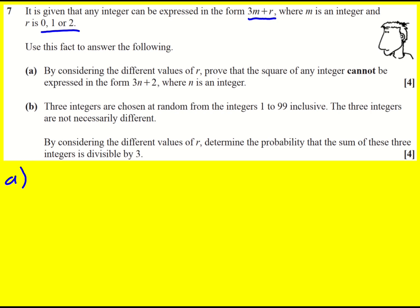So using that idea, we're going to consider these different values of r and show that the square of any integer cannot be expressed as 3n+2, where n is an integer. So I'm going to look at three cases. Case 1, r is equal to 0, and then we get 3m plus r is just going to be 3m in that case, so 3m squared is 9m squared, which is actually equal to 3 times 3m squared, so not in form 3m plus 2.